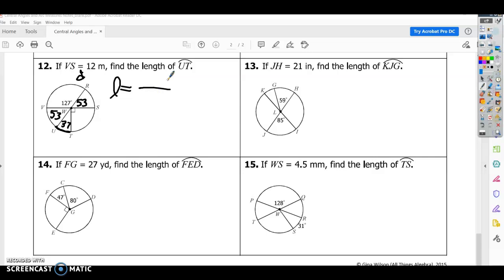So the length formula is, I'm looking for UT, so I'm going to take that measure, 37, and times that by the diameter pi, and the diameter this time is 12 pi over 360. So you can see this works the same way each time. It's just about being able to figure out what the different parts of the circle are.